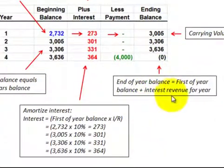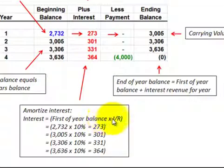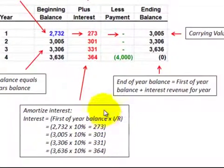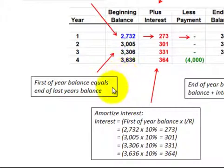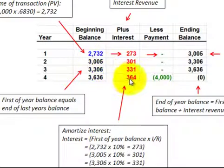The end-of-year balance equals the beginning-of-year balance plus the interest revenue for the year — that's how we calculate it. Looking at our interest earned, we amortize that interest where interest equals the first-of-year balance times the interest rate. The first-of-year balance equals the end-of-last-year balance, so the end of year one becomes the beginning of year two. That's the interest revenue, or discounted revenue, that we charge against the note receivable.